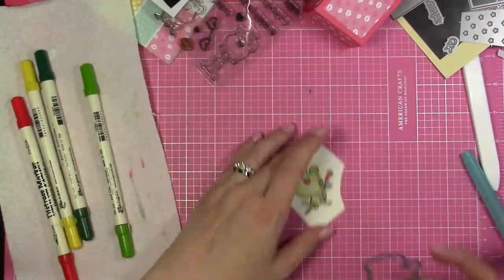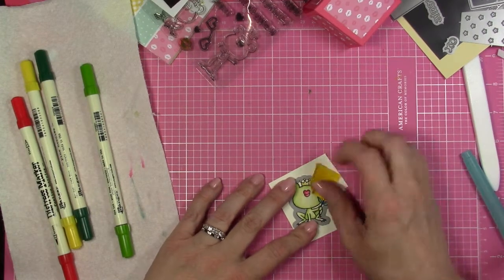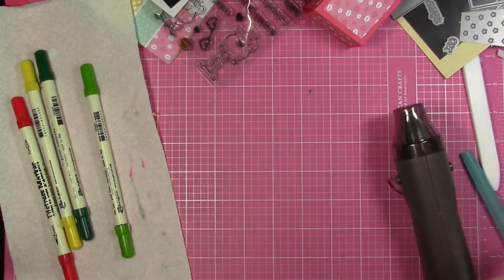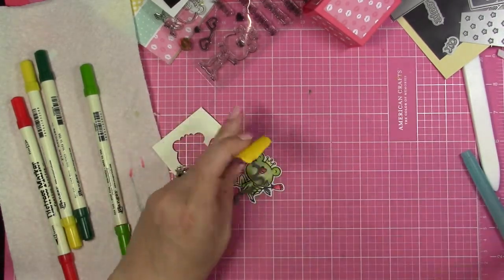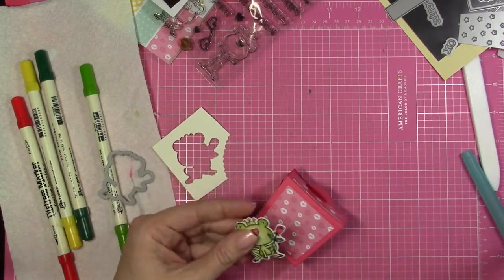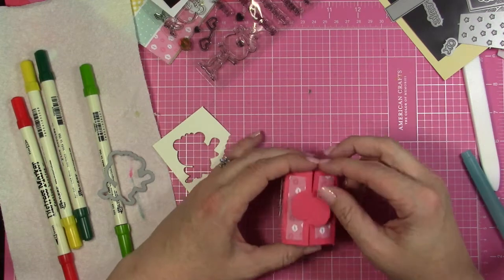So now that my image is all colored, I'm going to use a coordinating die and I'm going to go ahead and run that through my Big Shot and cut that out. Then I'm going to go ahead and add a piece of foam tape to the back of the image. I'm going to put that in the bottom corner of the front of the box.